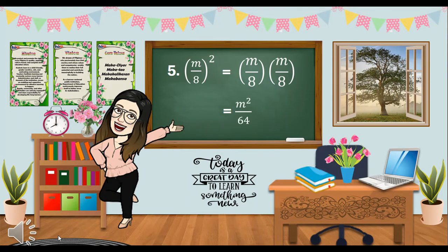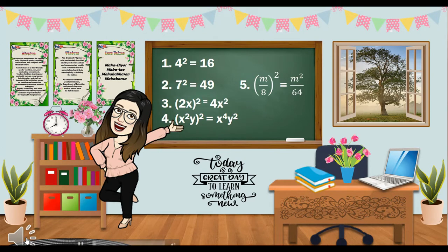The quantities 16, 49, 4x squared, x to the 4th y squared, and m squared over 64 are perfect squares. Obviously, perfect squares result from quantities being multiplied by themselves.